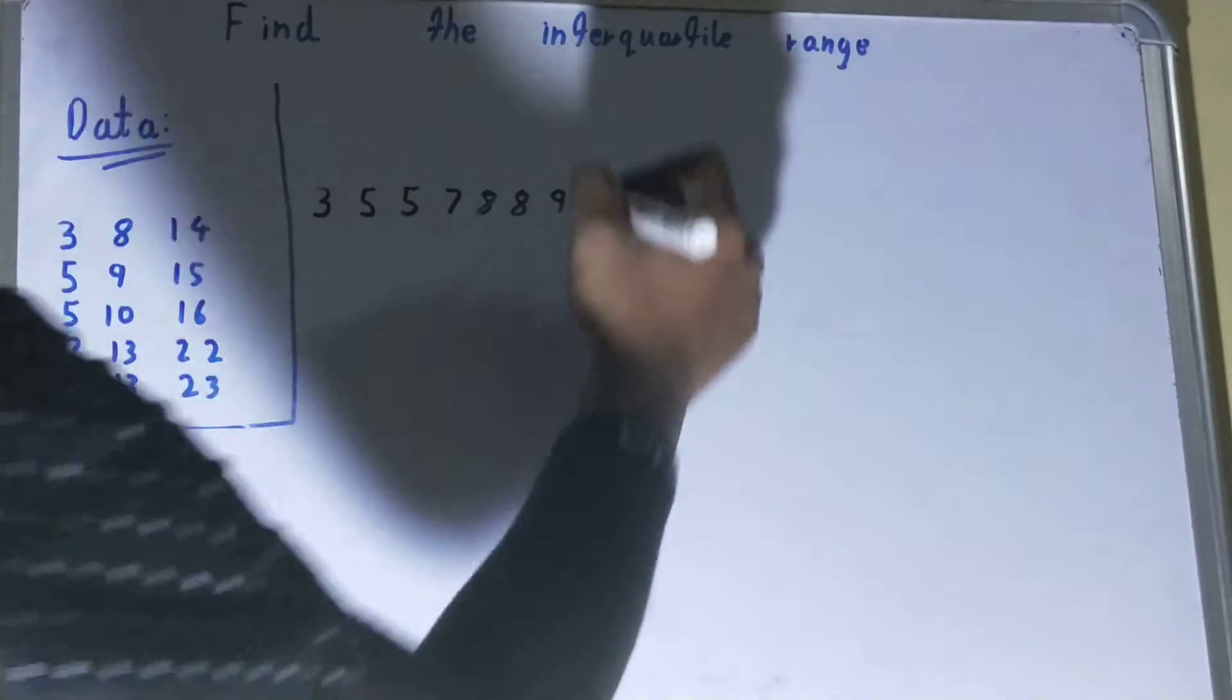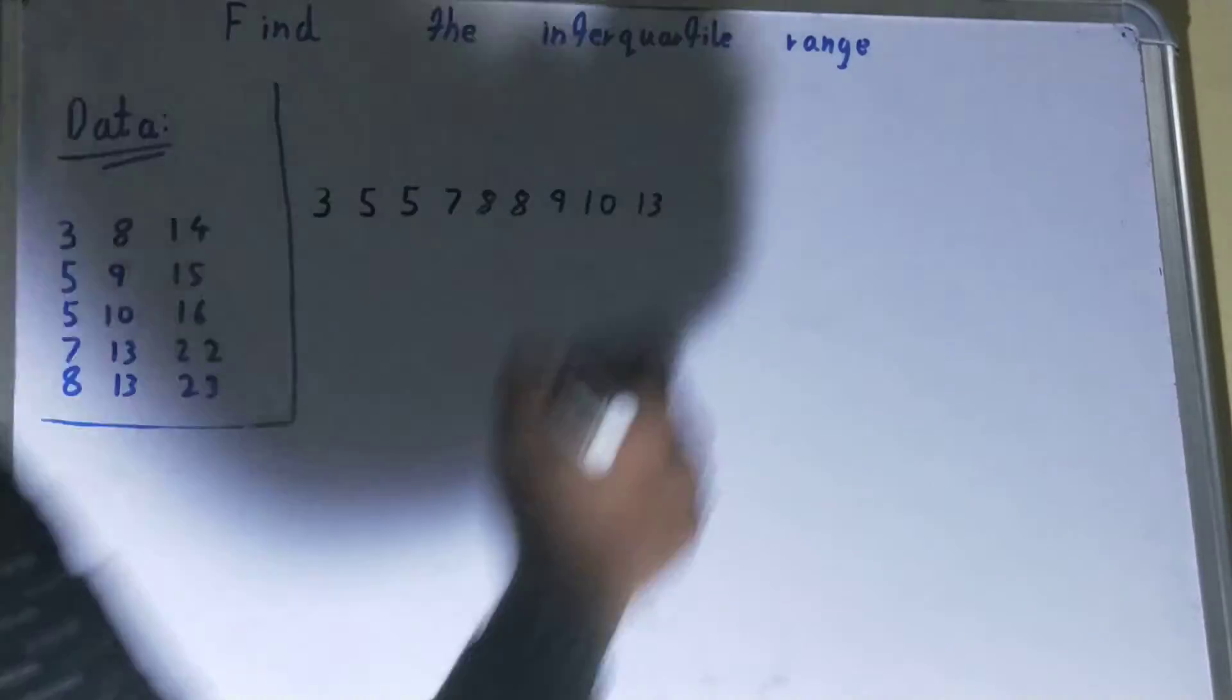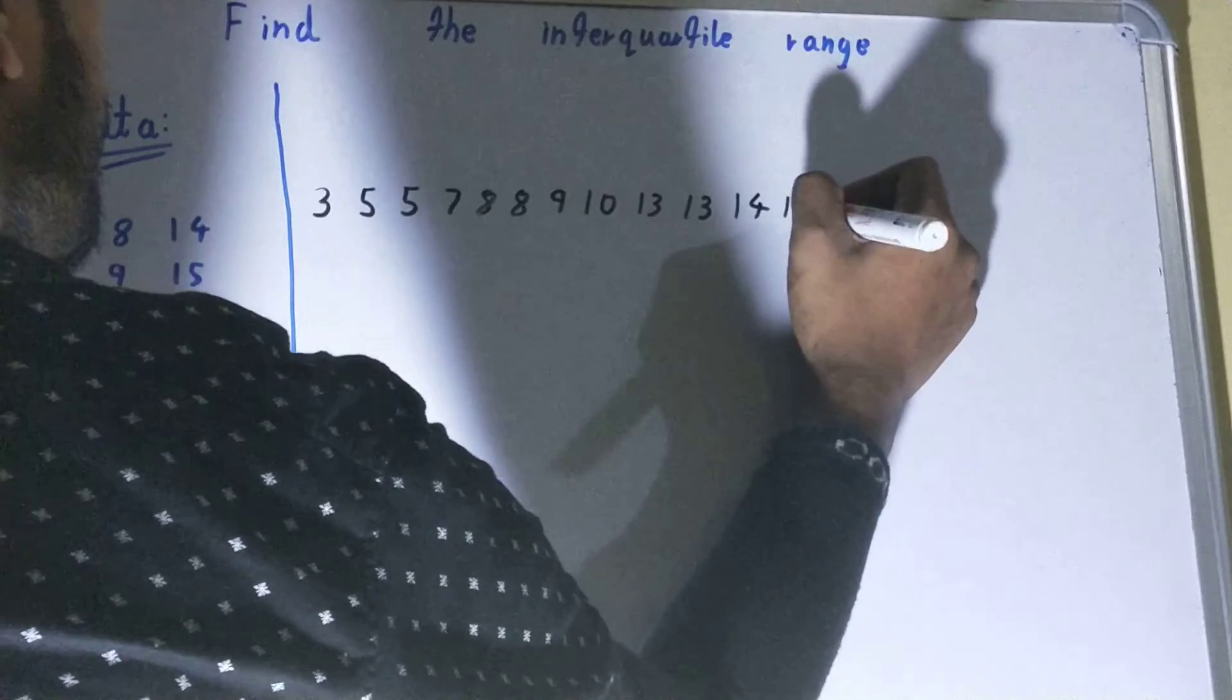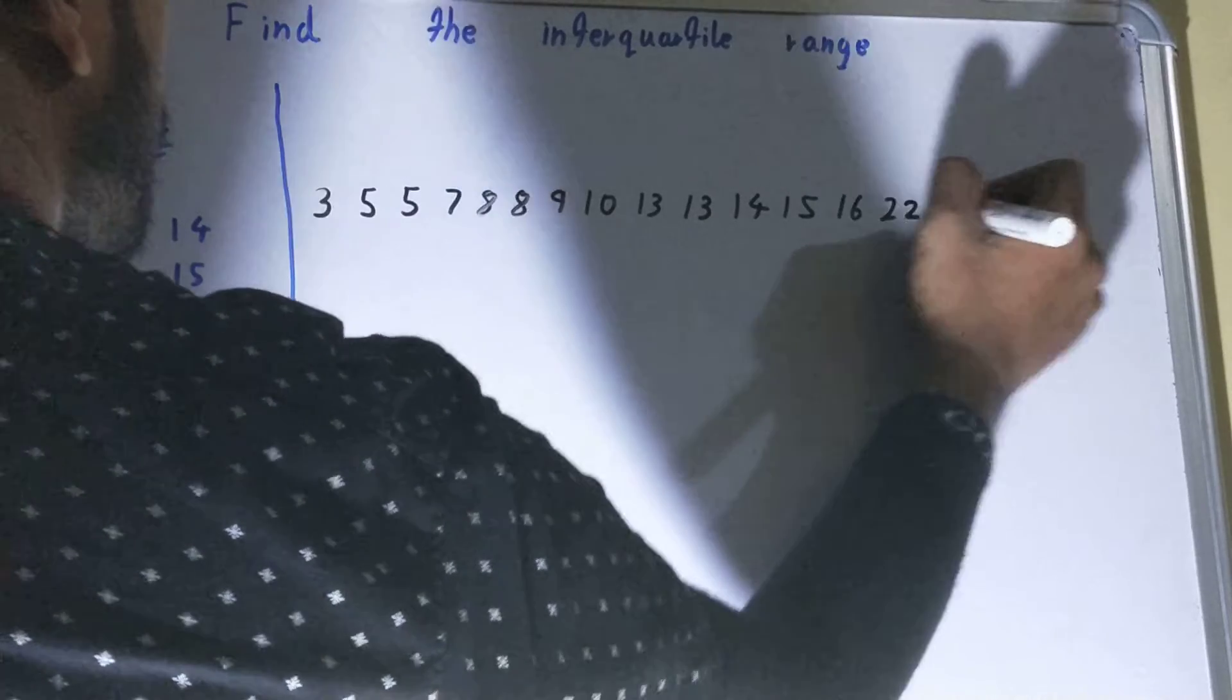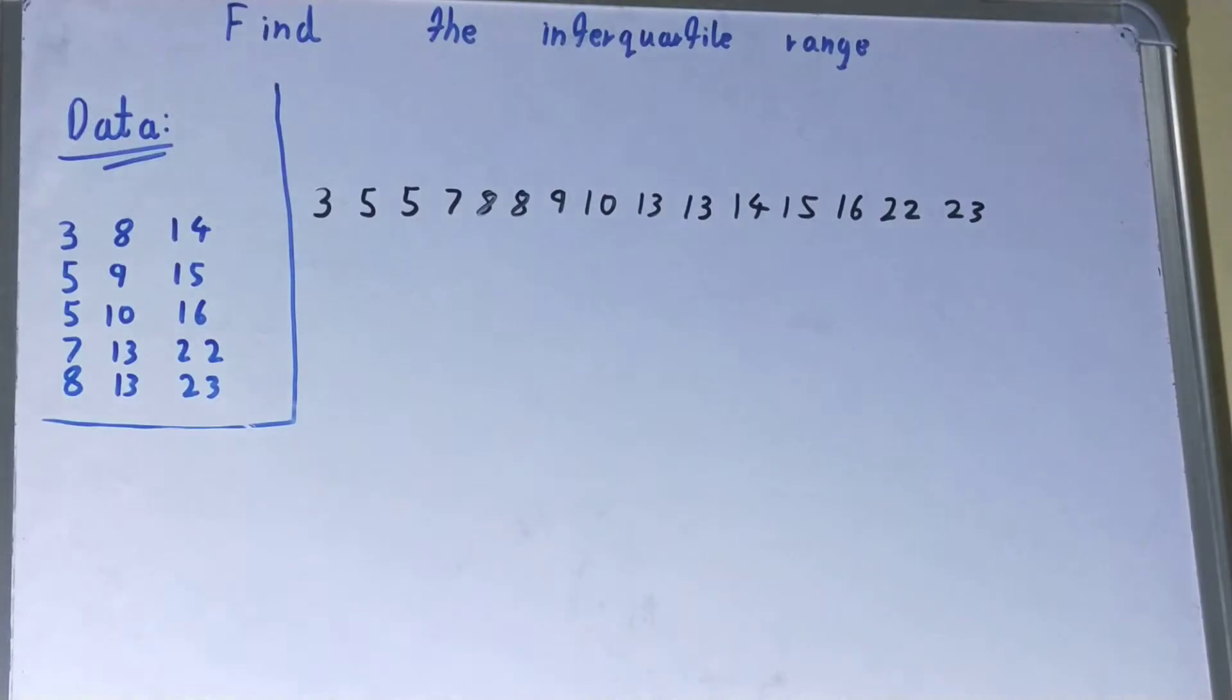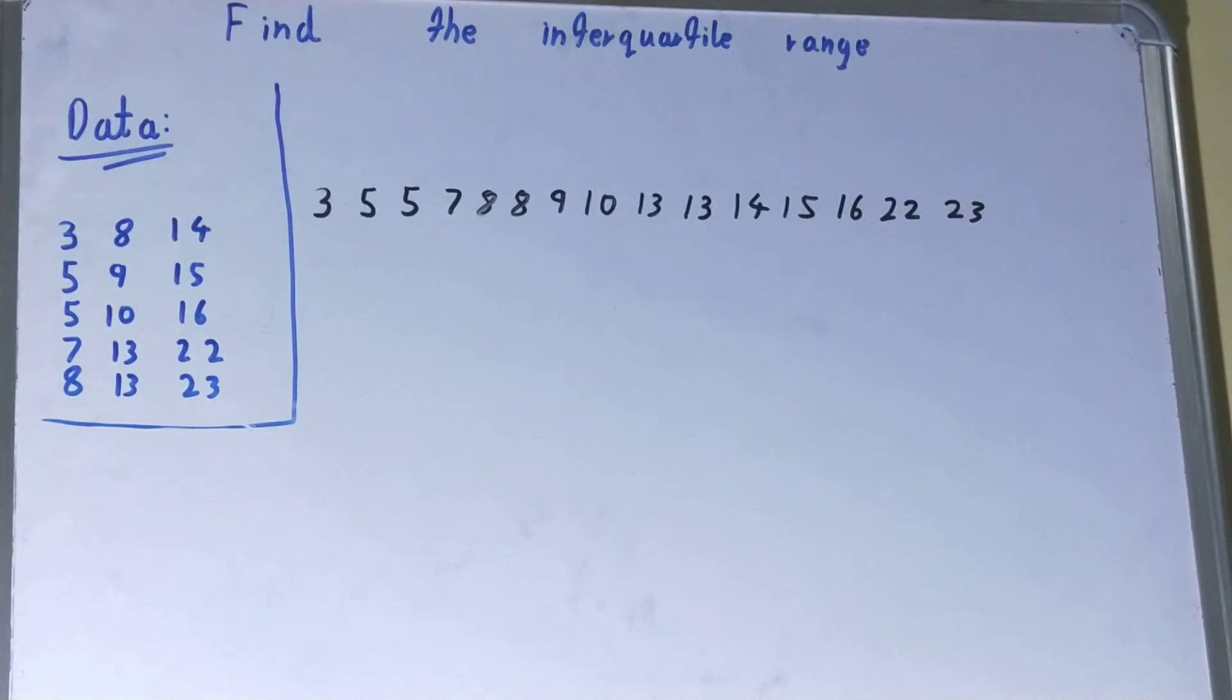Then 10, 10, 13, 13, 14, 15, 16, 22, and 23. All right, so we have just written the data set in a sorted manner from smaller one to the larger one.